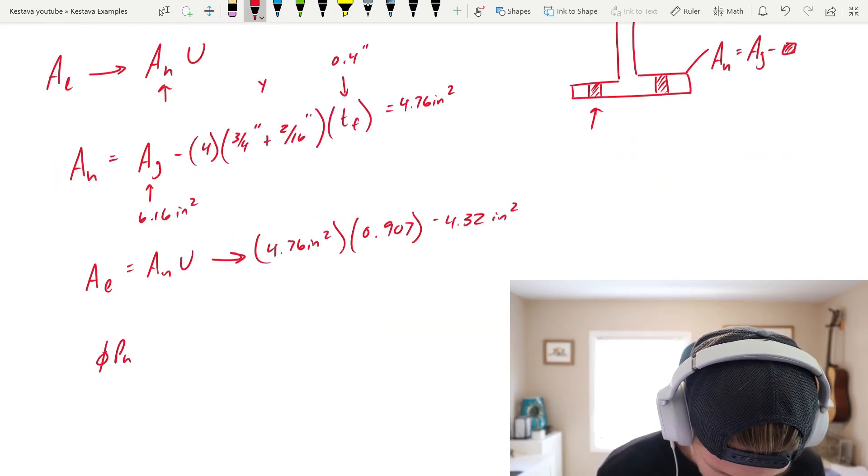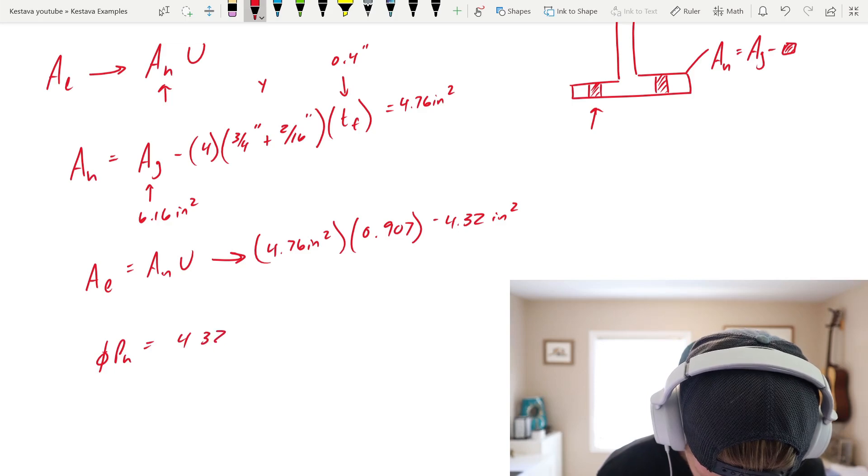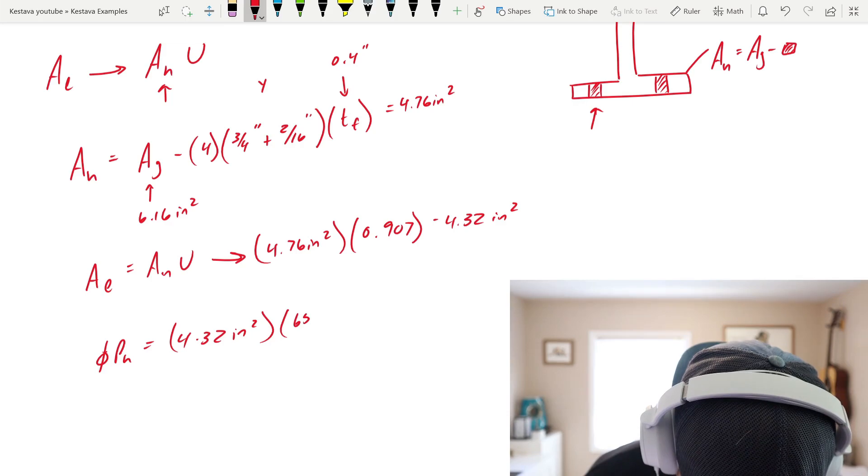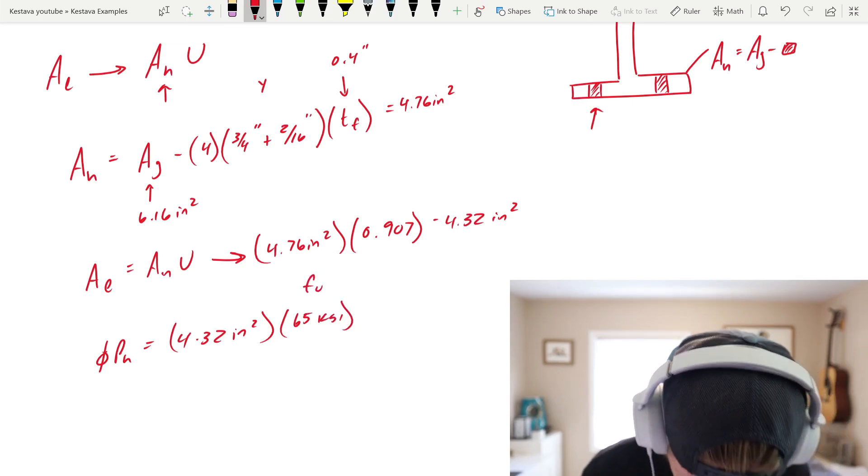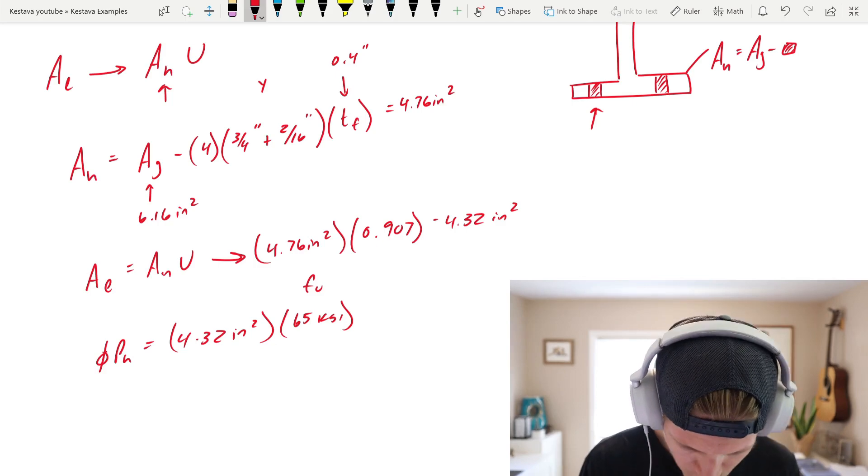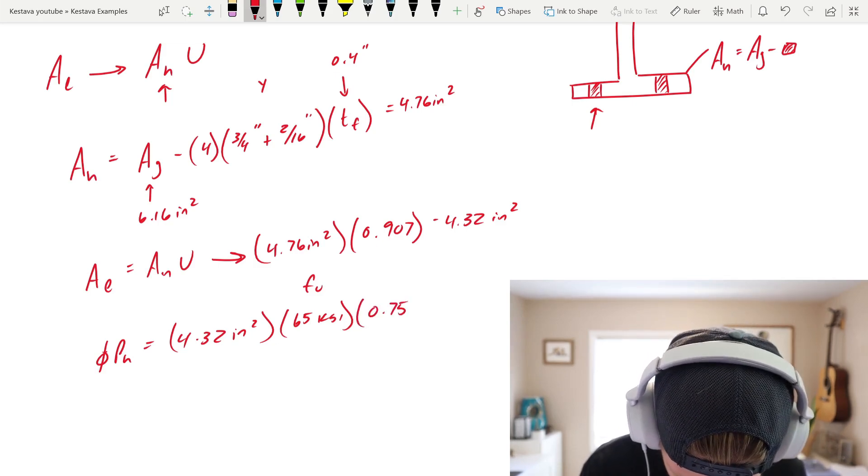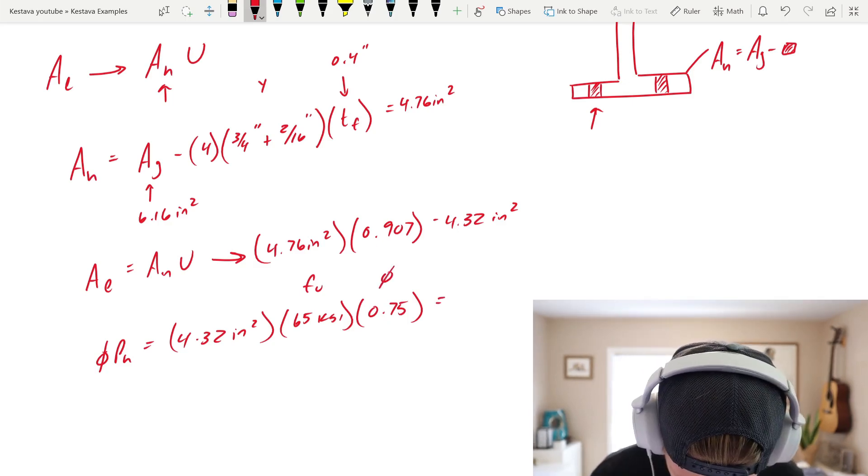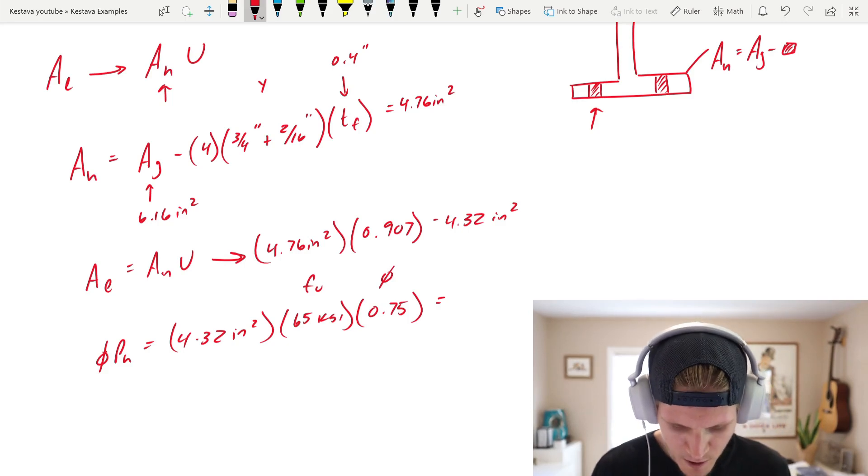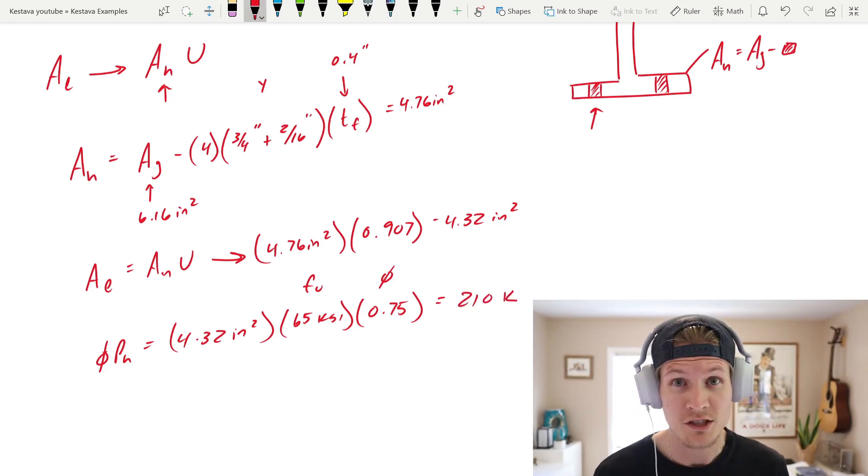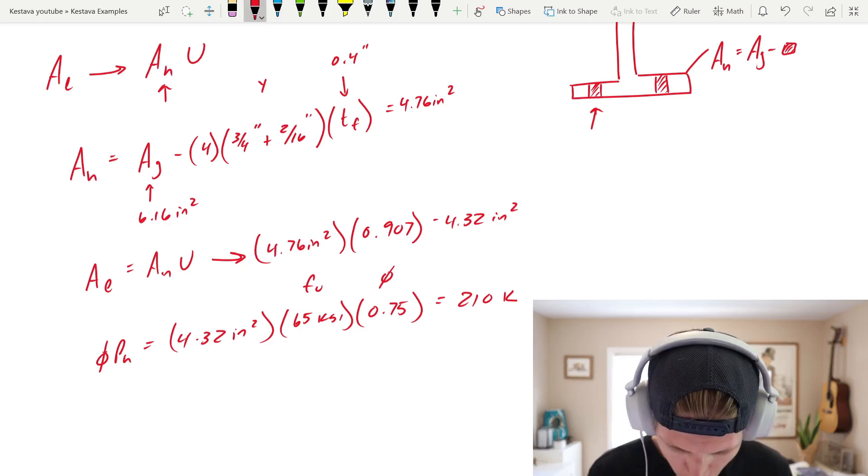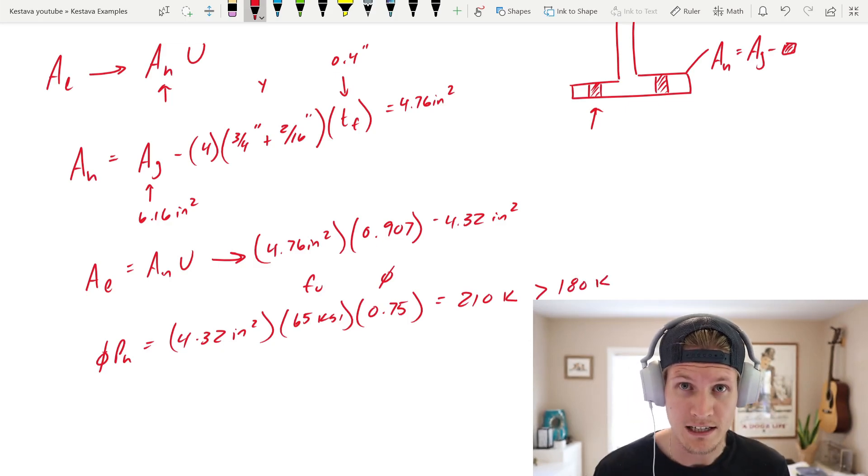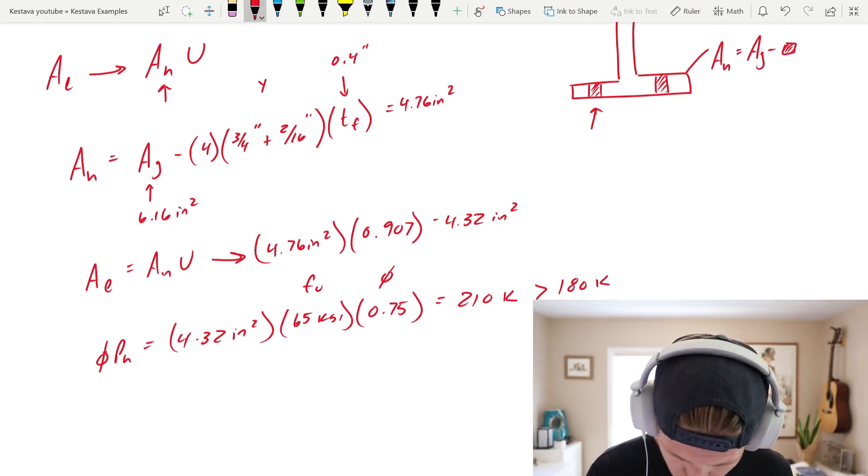That gets us phi PN equal to 4.32 inches squared times tensile capacity which is 65 KSI which is defined above. That's your F sub U. So, that's KSI times inches squared and then we just need phi. Phi in this limit state is 0.75. All of that comes out to 210 kips. Again, kips per inch squared times inches squared just gets you a capacity which is greater than 180 kips from our factored LRFD demand. So, we're still okay.